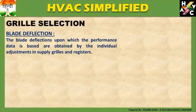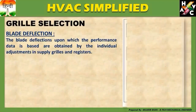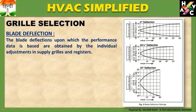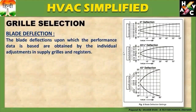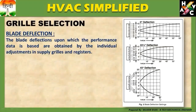Grill Selection: Blade deflection upon which the performance data is based are obtained by individual adjustment in a supply air grill register। Blade के deflection के अनुसार हमारी total throw और angle का parameter पता चलता है। For example, zero deflection (straight) पर maximum throw 60 feet तक है। उसी grill को 22.5 degree deflection angle पर करते हैं तो throw 60 से 50 feet हो जाती है। 45 degree deflection angle पर width की capacity बढ़ती है लेकिन maximum throw घटते हुए 30 feet तक हो जाता है। तो यह blade deflection setting कहा जाता है।